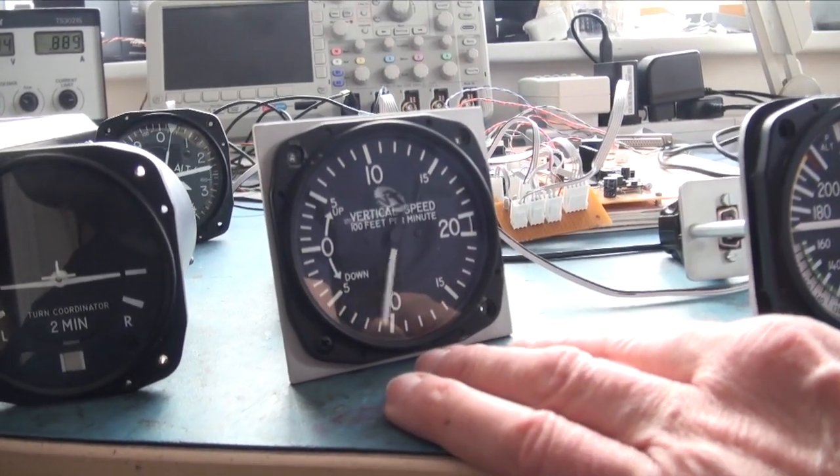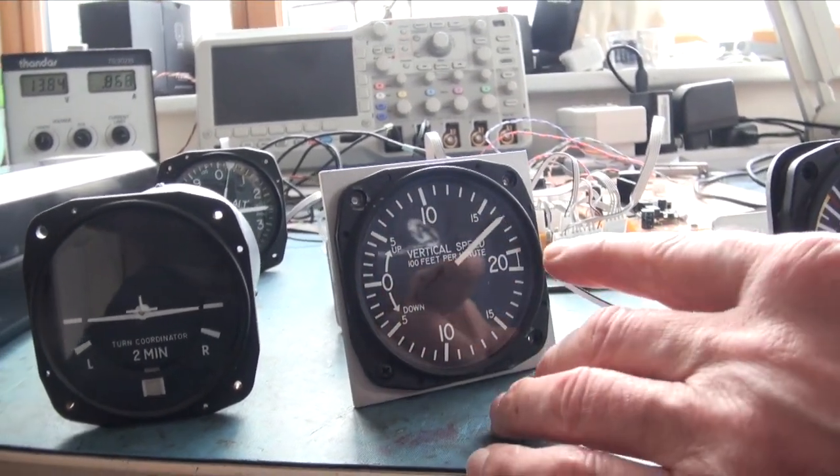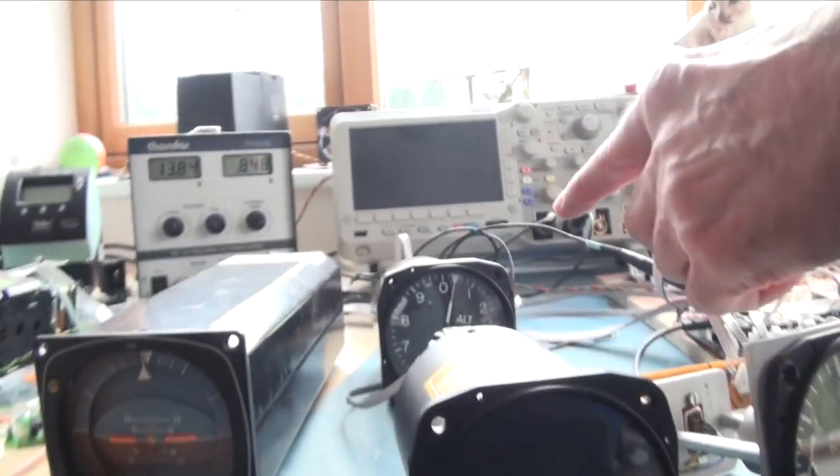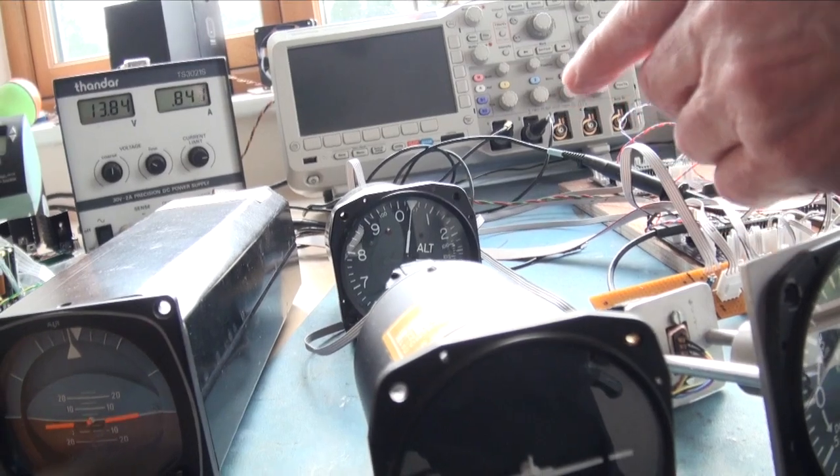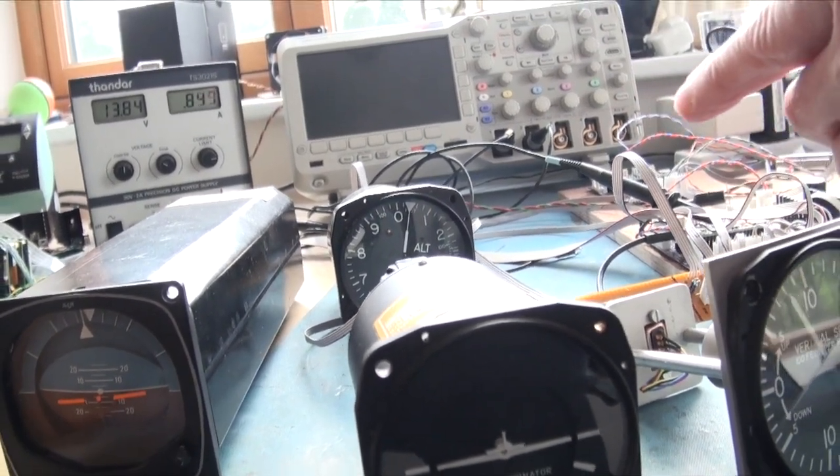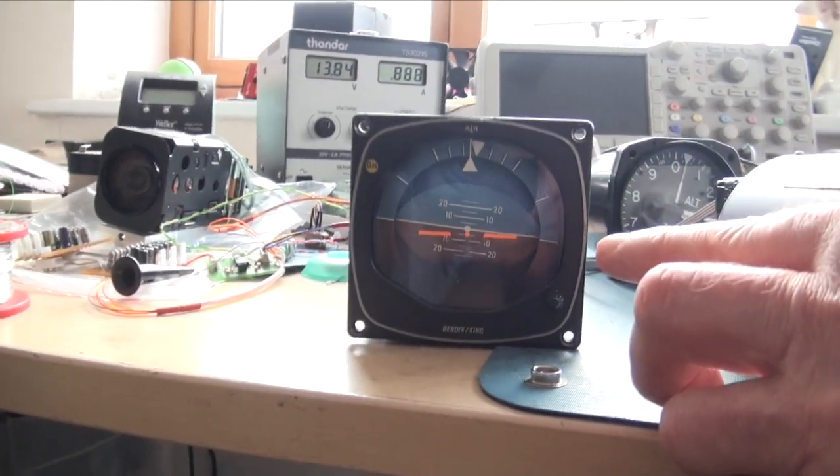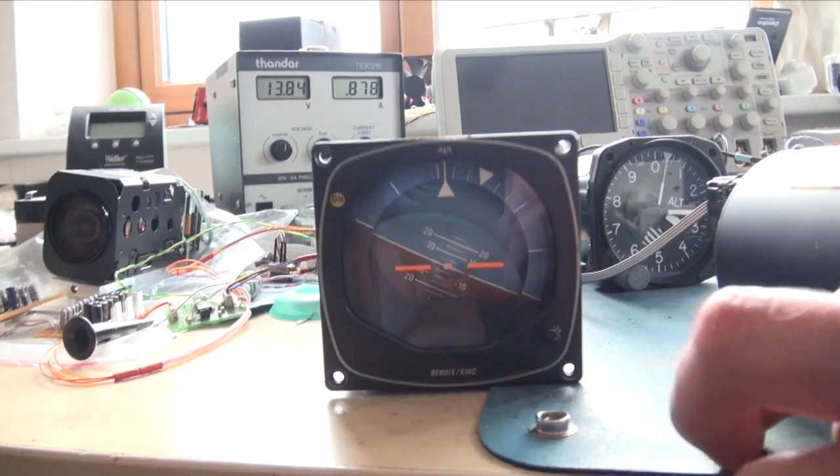Turn slip I'm still working on—that's not working at the moment. But the altimeter is working in ten-foot steps, and the artificial horizon works in one-degree steps, though you can't really see that too much.